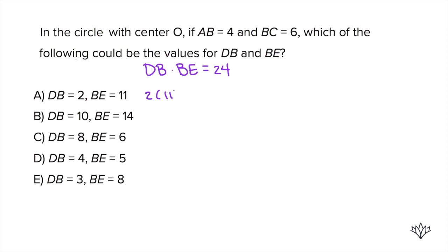Answer choice A, we would have two and 11. Two times 11 is 22, not 24. Answer choice B, 10 times 14. That's 140, not 24. Answer choice C, eight times six, 48, not 24. Four times five, 20, not 24. It has to be answer choice E, three times eight, which is 24. Perfect.